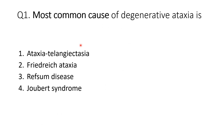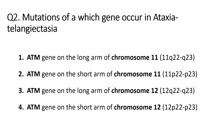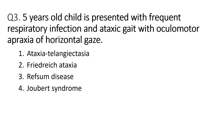These are some MCQs on this topic. The most common cause of degenerative ataxia is ataxia telangiectasia. Mutation of the ATM gene occurs on the long arm of chromosome 11. A typical MCQ scenario: a 5-year-old child presented with frequent respiratory infections, ataxic gait, and oculomotor apraxia of horizontal gaze — the diagnosis would be ataxia telangiectasia.